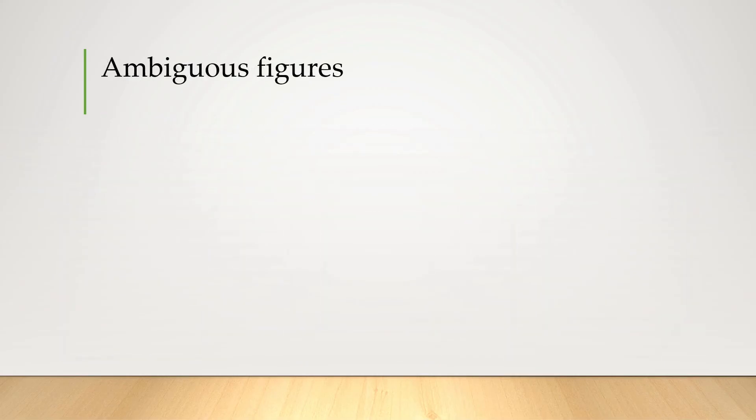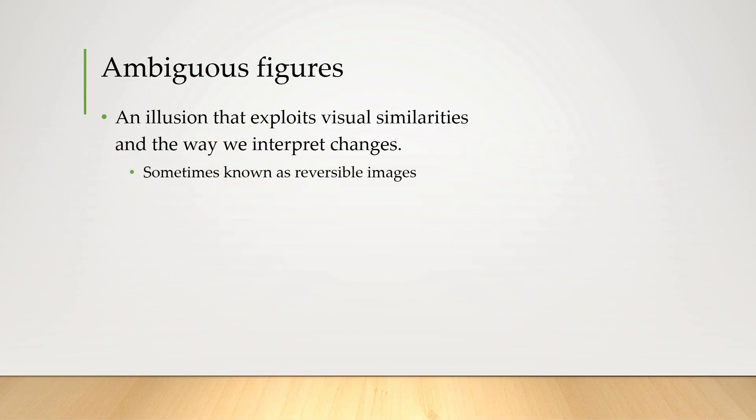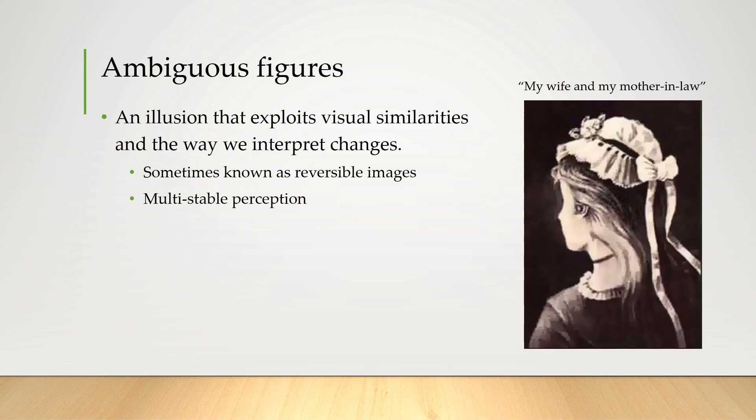And finally, ambiguous figures. So these are illusions that exploit visual similarities and the way that we interpret little changes. They're also known as reversible images and sort of show us how we can have this thing called multi-stable perception, like seeing different things at the exact same time. A classic example of this is this image called My Wife and My Mother-in-Law. I'll give you a moment to see if you can see both images in that picture.